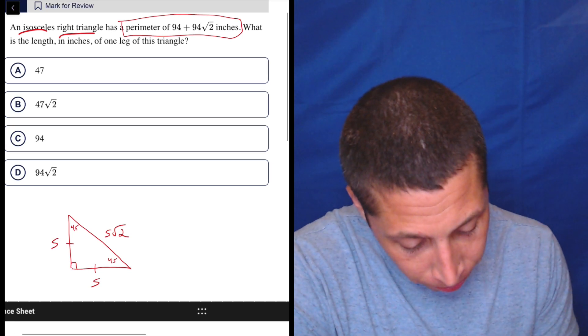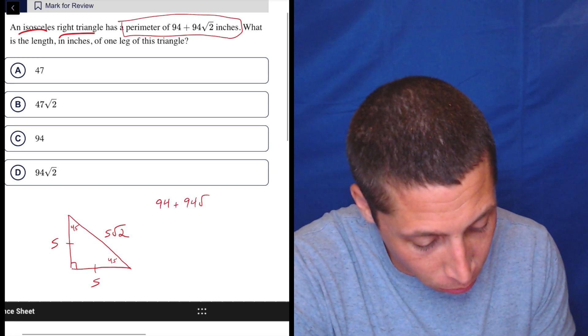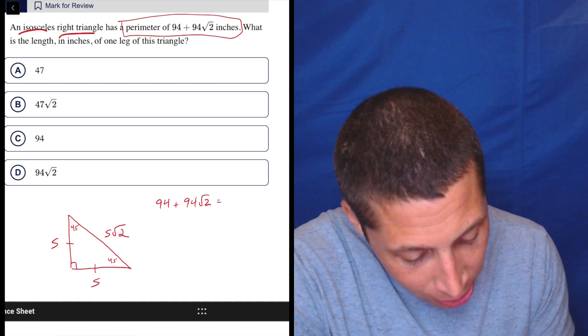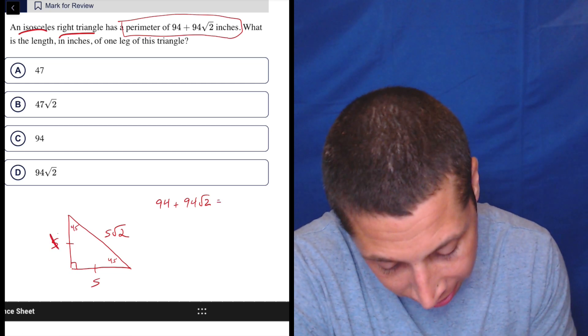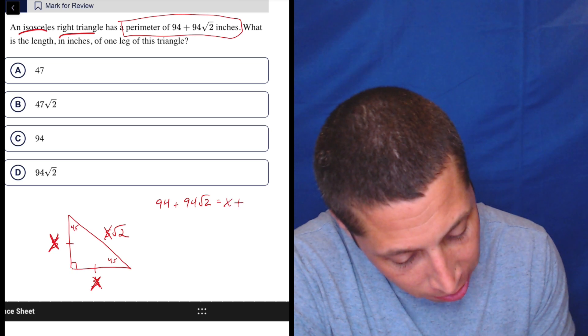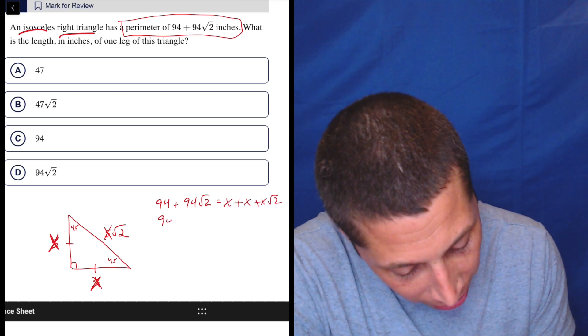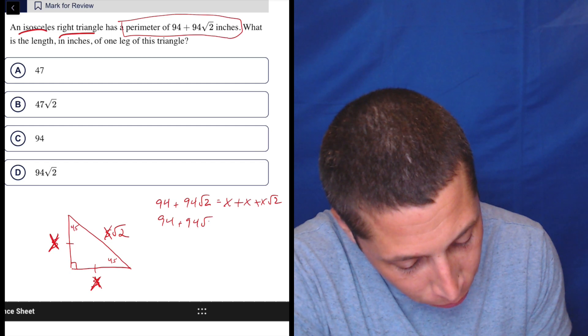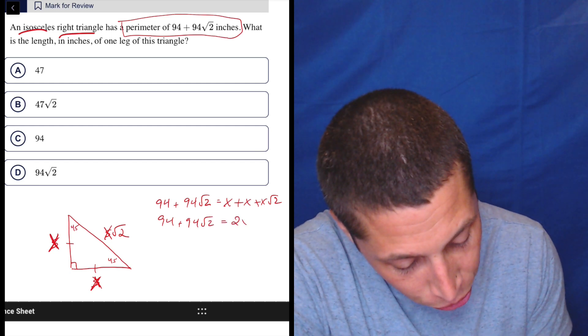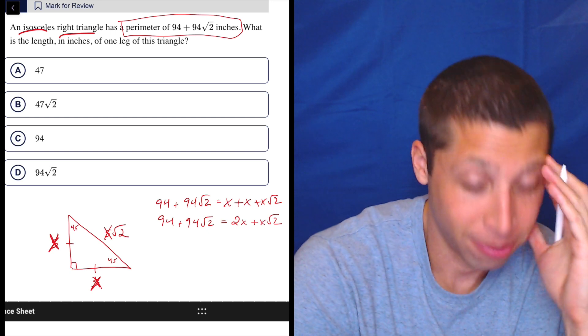So the perimeter of 94 plus 94 root 2 is equal to this. I'm going to switch from the X's. I hate these S's. X, X, X root 2. So X plus X plus X root 2. So 94 plus 94 root 2 is equal to 2X plus X root 2. So that's kind of messy,